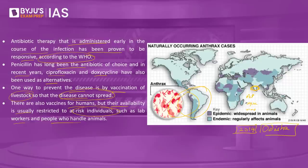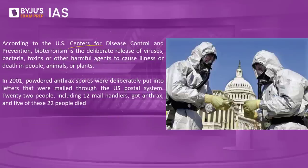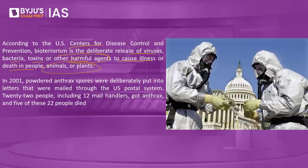Another aspect of anthrax is that it can be used as a tool of bioterrorism. According to the US Centers for Disease Control and Prevention, bioterrorism is the deliberate release of viruses, bacteria, toxins, or other harmful agents to cause illness or death in people, animals, or plants. These agents are typically found in nature but may also be altered in a laboratory, making antibiotics and antivirals ineffective. In 2001, powdered anthrax spores were deliberately put into letters mailed through the US postal system. Twenty-two people including 12 mail handlers got anthrax, and 5 of those 22 people died.